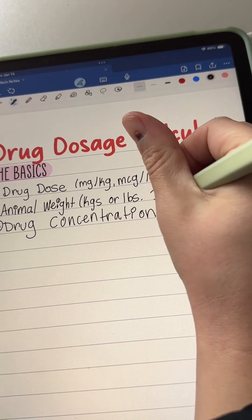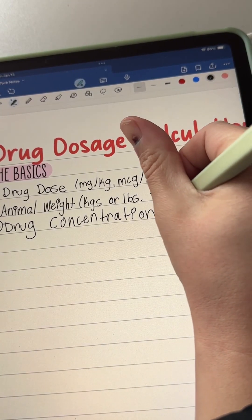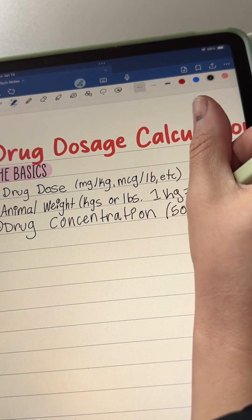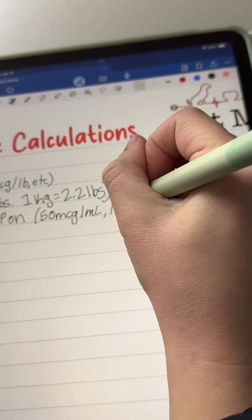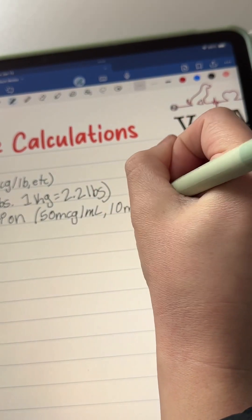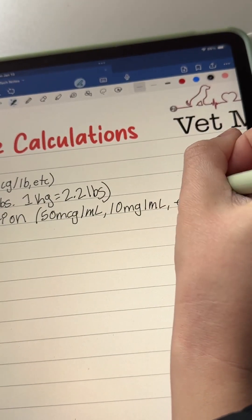And if you're using lidocaine, you might see your concentration is 2%. So with those, you'll have to remember 2% is 20 mg per ml. But these are all things that you'll learn on the job and it will just be instilled in your brain. You won't even have to think about it after a while.